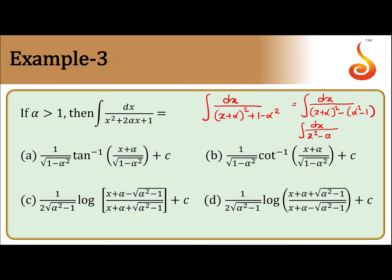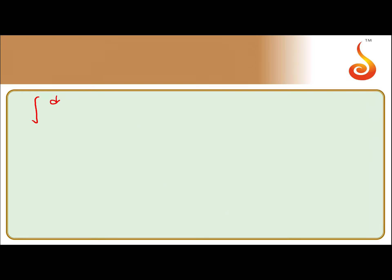This is now in the standard form of dx by x squared minus a squared, which equals 1 by 2a times log of x minus a by x plus a, plus c. So we rewrite the integral as dx by x plus alpha whole square minus alpha squared minus 1 to the power one half, whole squared.